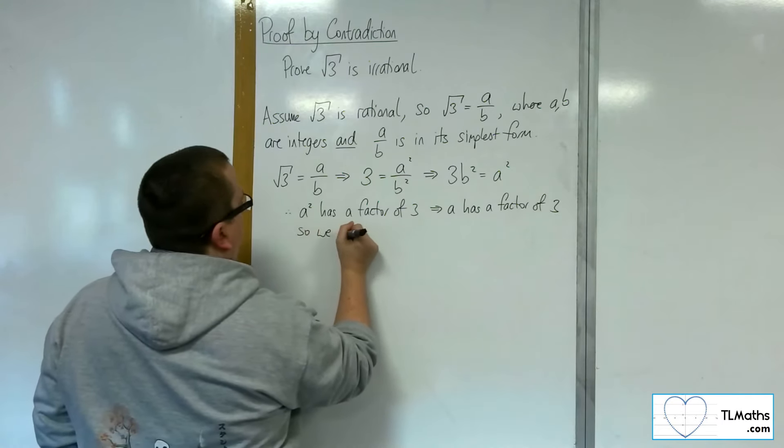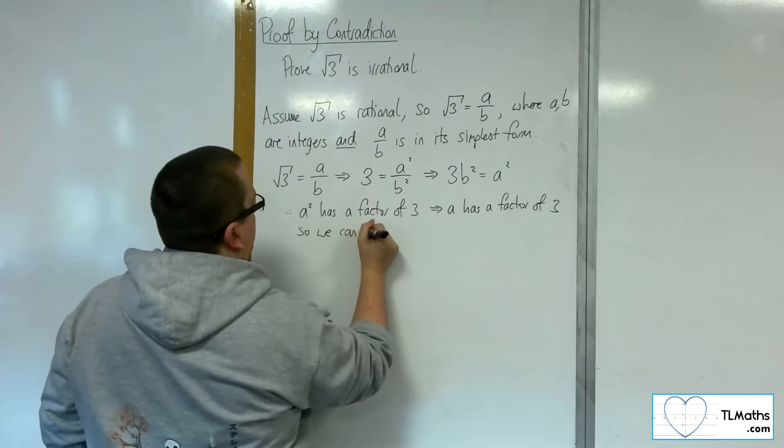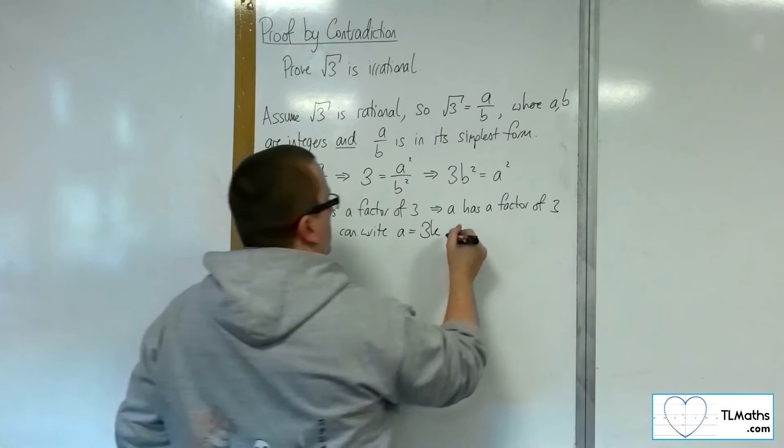So we can write that a is equal to 3 lots of some number k, where k is an integer also.